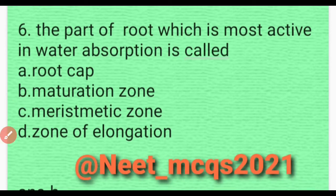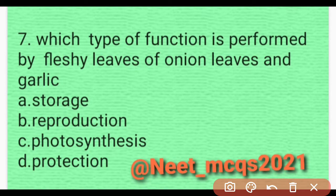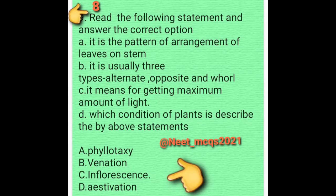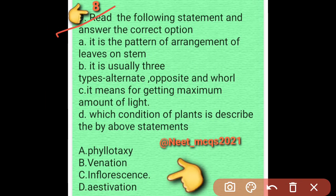Question 6: Which type of function is performed by the fleshy leaves of onion and garlic? They basically perform the storage function. Option A is correct — they store food in the form of leaves.